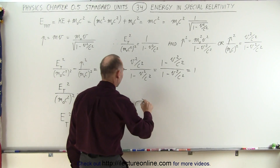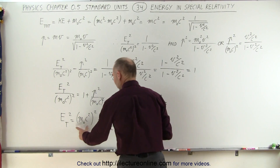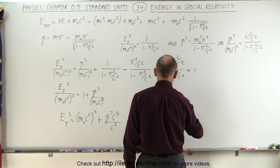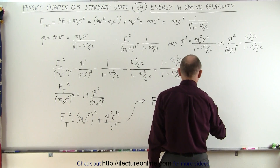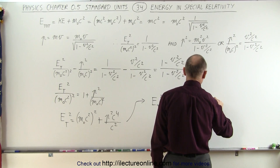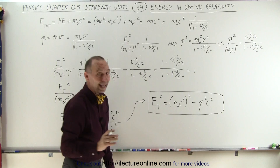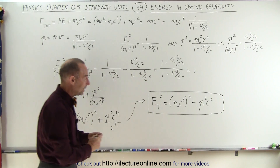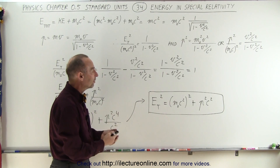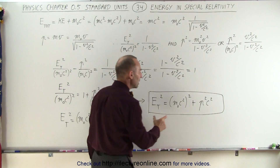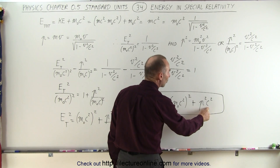We can now write that the total energy of a particle, quantity squared, is equal to the rest mass energy squared — m-sub-naught c squared quantity squared — plus, when the c's cancel out, momentum squared times c squared. This is the equation for a particle with rest mass m-sub-naught. When it moves at relativistic speeds, the total energy equals the rest mass energy plus p squared c squared.